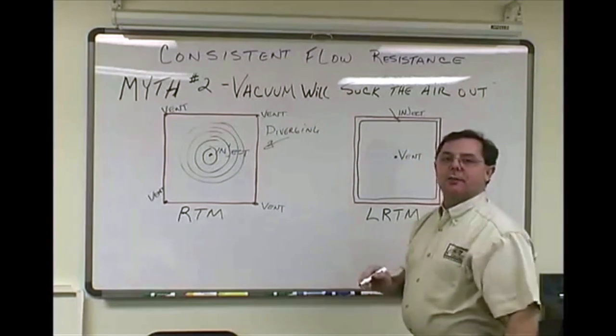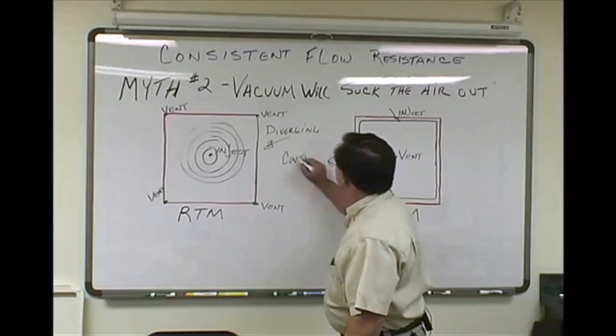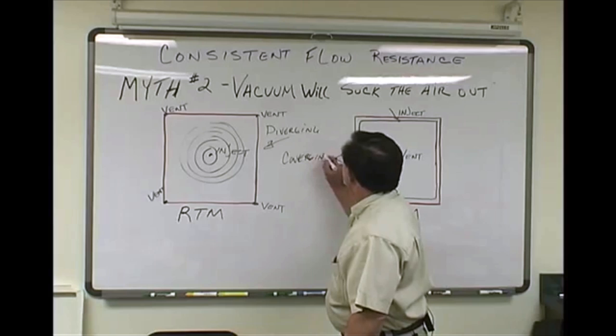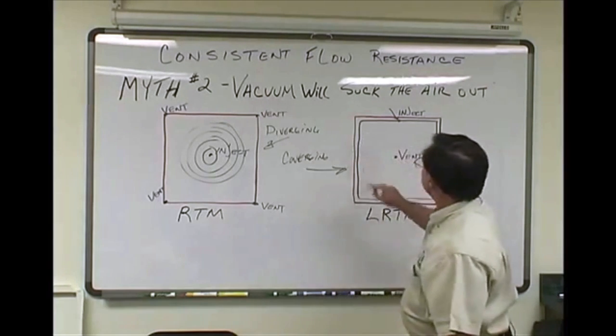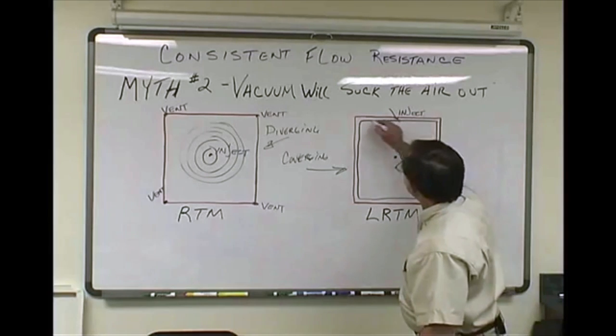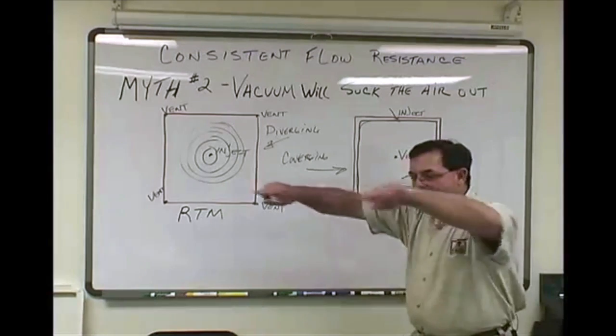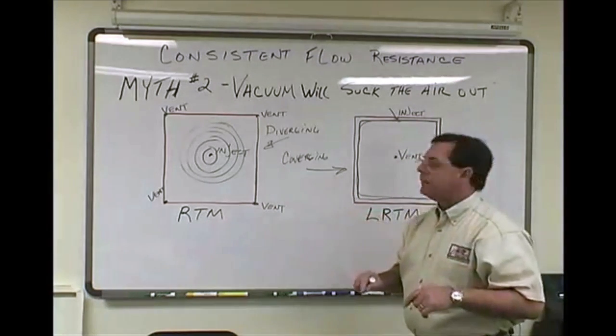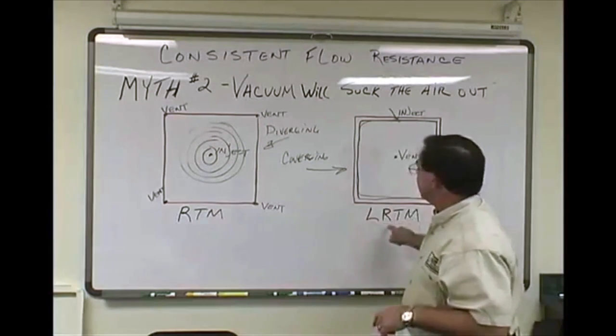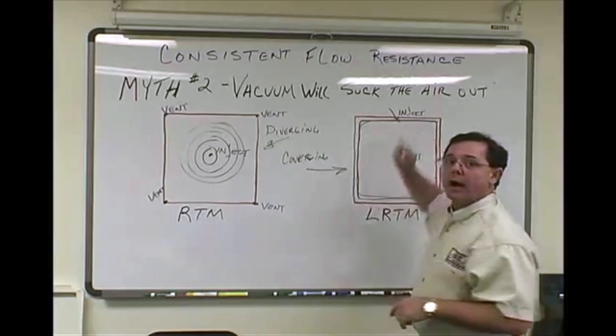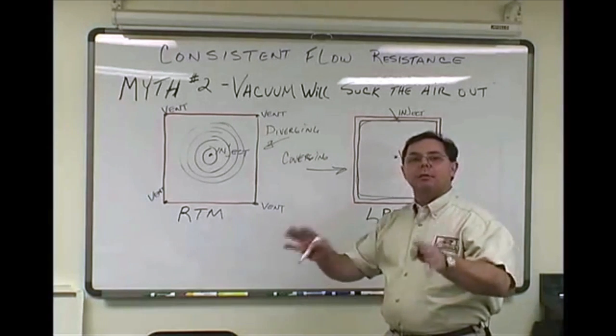Now, in that case, we don't inject in the center. And this that I'm about to tell you is the fundamental difference between RTM, which was a diverging flow path from the point of injection diverging away. The biggest difference between the two processes is the RTM light process is a converging, converging flow path. What does that mean? It means that we inject around the perimeter of the fiber pack, around the outer edge of the mold.